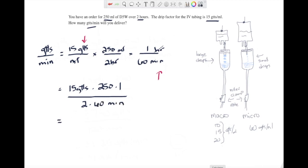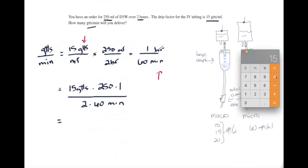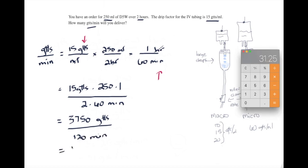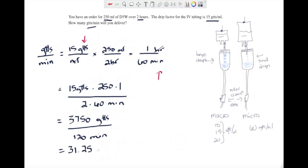So 15 drops times 250 times 1, divided by 2 times 60 minutes. If I bring up my calculator to do the calculation quickly, it is 3750 drops divided by 120 minutes. Further this out and you can see that the answer is 31.25 drops per minute. However, we always round up or down to the nearest number, so this will be 31 drops per minute.